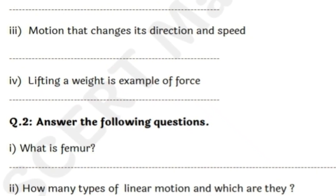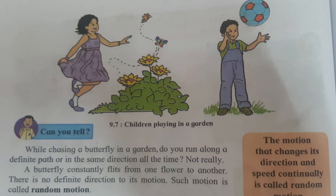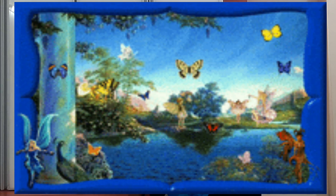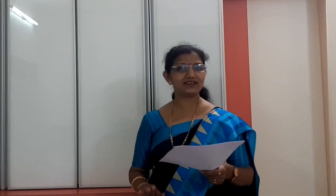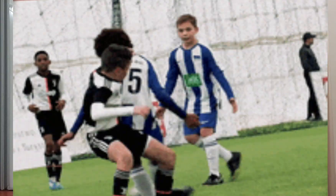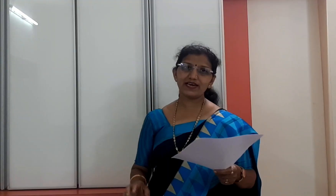Third: motion that changes its direction and speed. You must have observed the butterfly — it goes here and there. Stray animals don't have any fixed direction or speed. That's why it is the example of random motion, because this motion changes its direction and speed continuously.